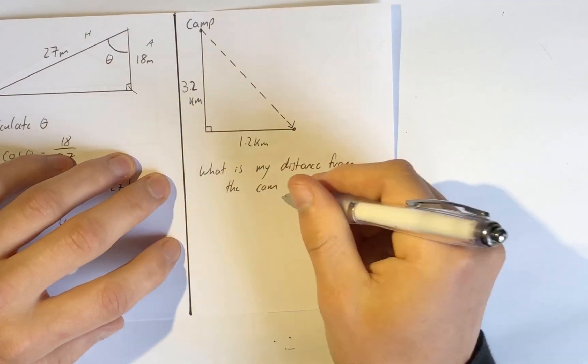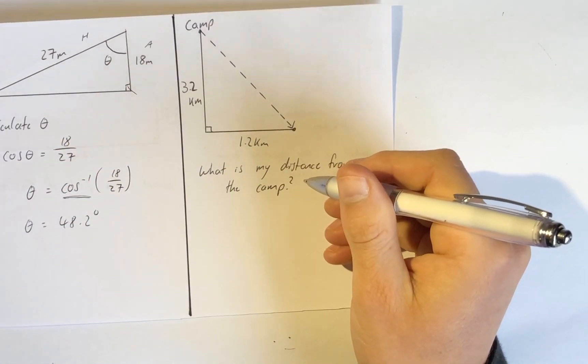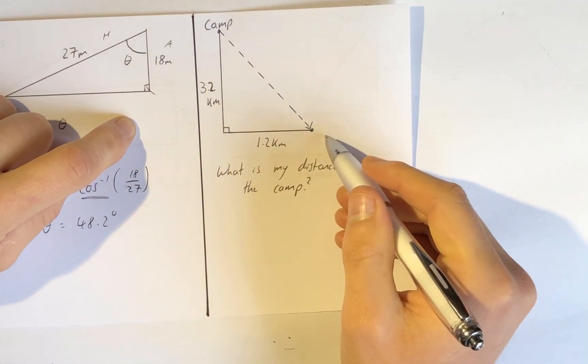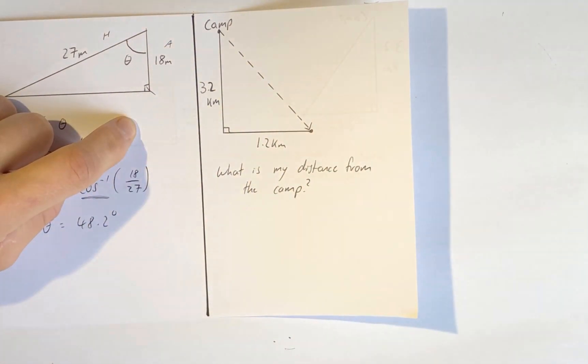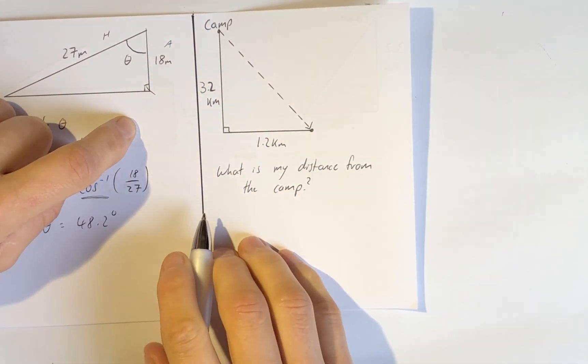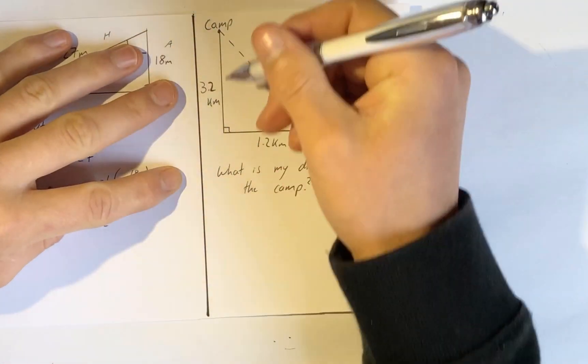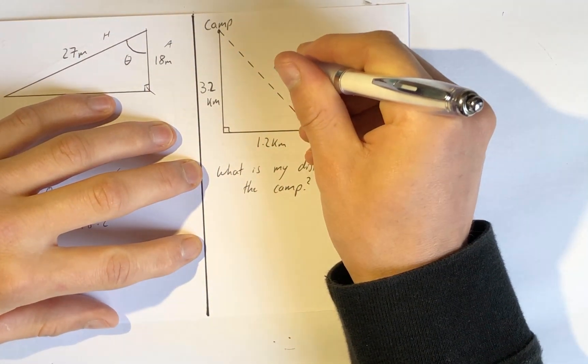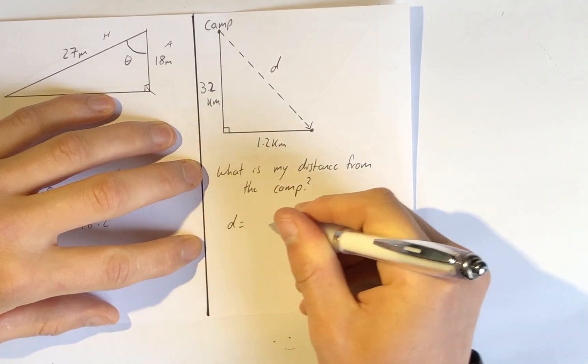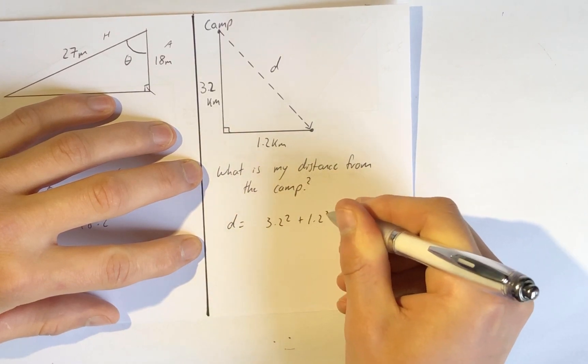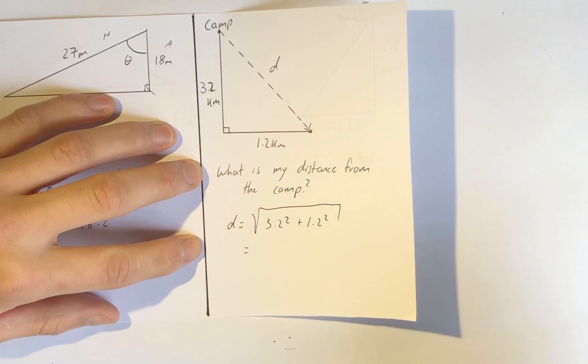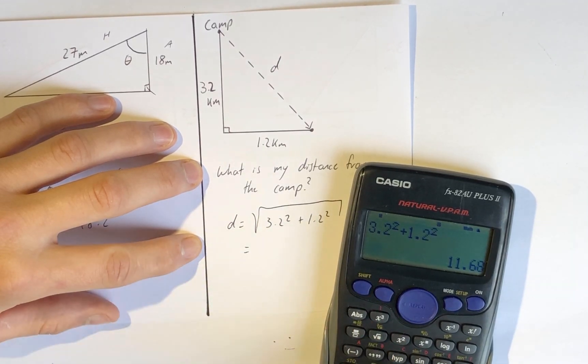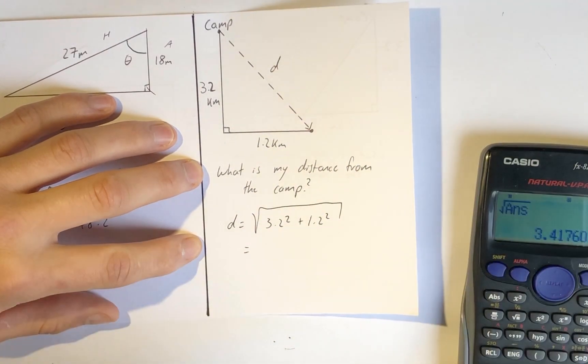I walk south 3.2 kilometers from a camp and then I walk east 1.2 kilometers. What is my distance from the camp? This is actually Pythagoras, so a short side plus a short side squared gives you the long side squared. This length I'll call distance d. d equals 3.2 squared plus 1.2 squared, and we square root that to get the distance. In a calculator: 3.2 squared plus 1.2 squared, then square root of that, 3.4.